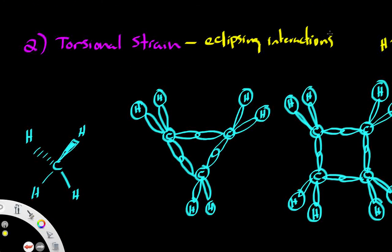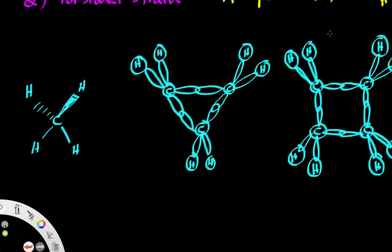Going back to Baeyer strain — it basically provides a basis for where strain occurs and where it doesn't. That basis is built off of a tetrahedral geometry, because a tetrahedral geometry has a bond angle of one hundred and nine point five degrees. Baeyer strain measures a destabilizing energy effect that results from deviation from one hundred and nine point five degrees. If you are over or under one hundred and nine point five degrees, you will have Baeyer strain.